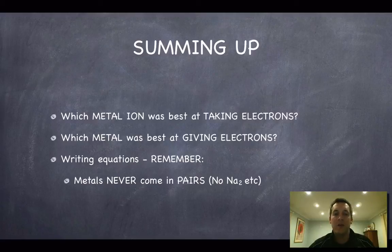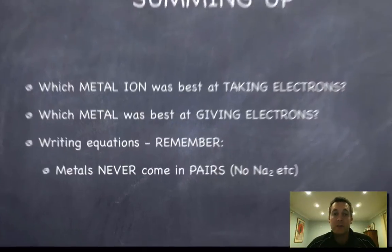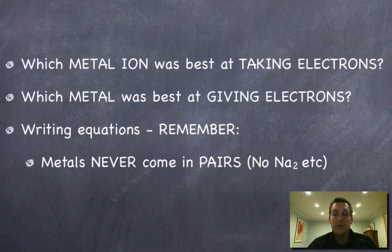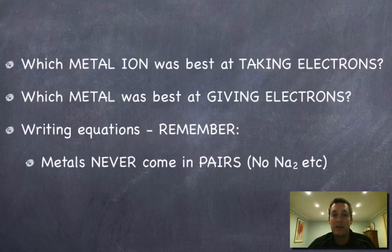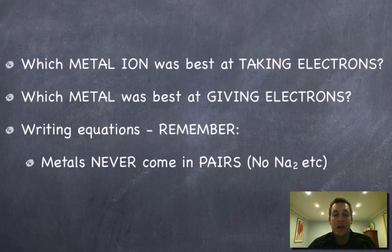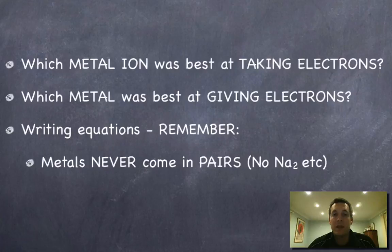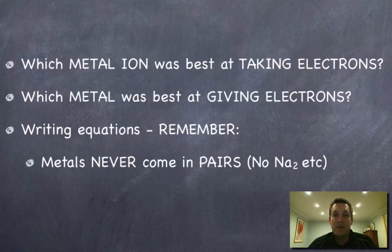To sum everything up: copper nitrate reacted with all the other metals, so copper ions were the best at taking electrons — copper was the best oxidizing agent. On the other hand, magnesium reacted with all the other solutions, meaning magnesium atoms could give electrons to every other ion — magnesium was the best reducing agent, i.e., the easiest metal to oxidize.